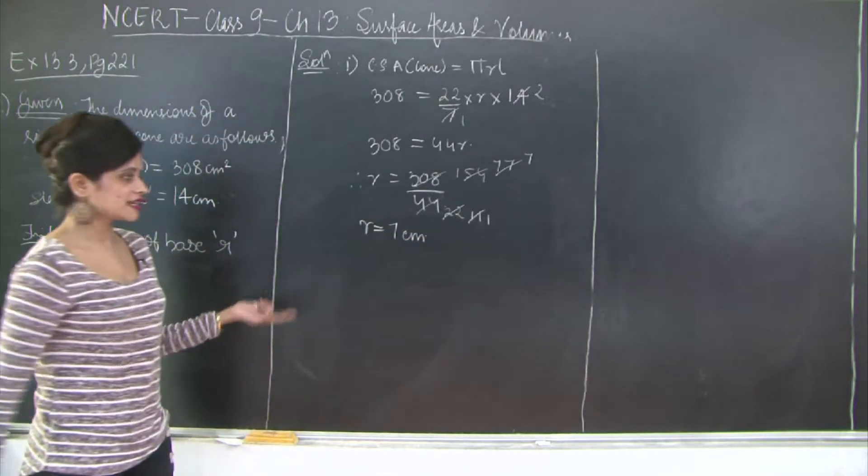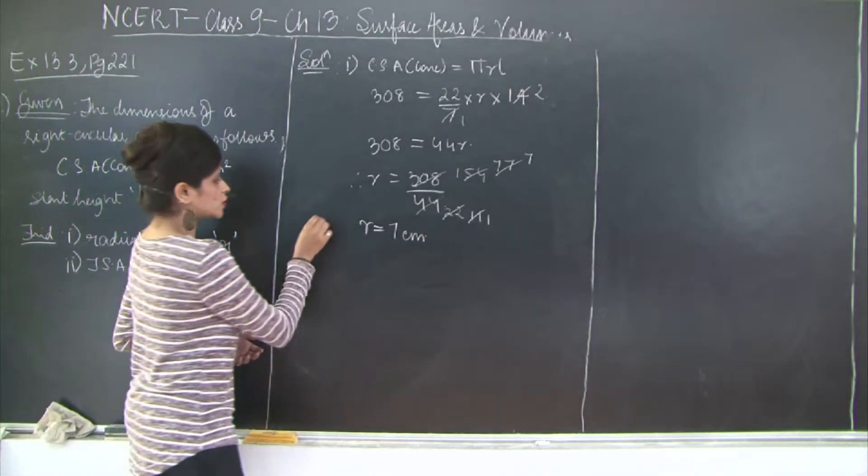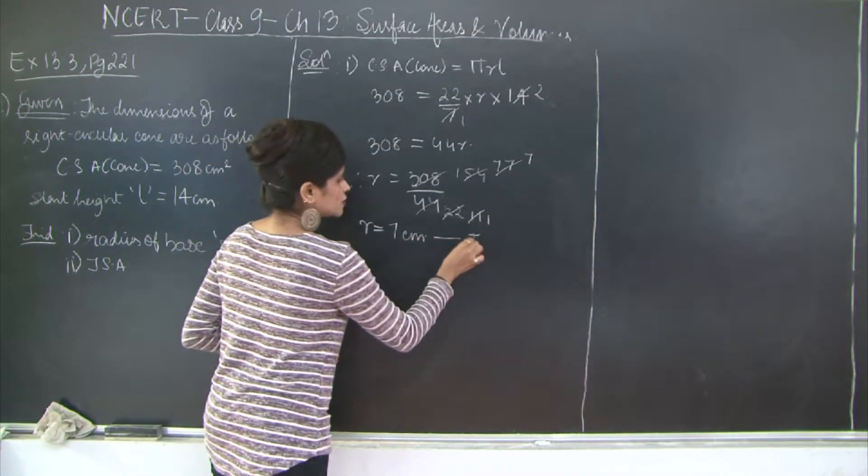Because all the units are given in cm and cm². So this is first the radius of the base.